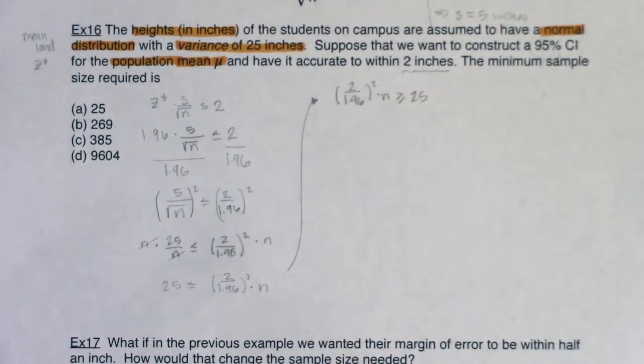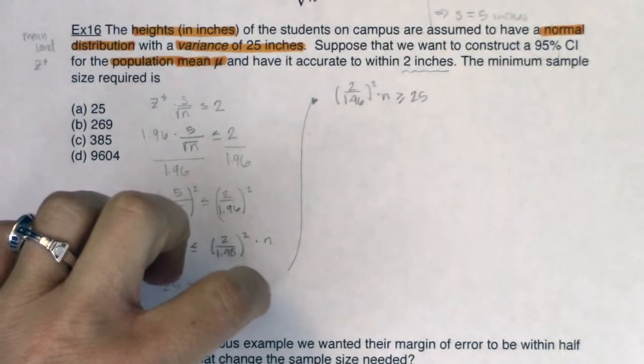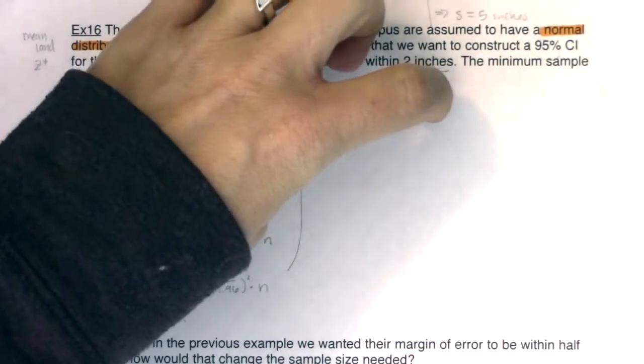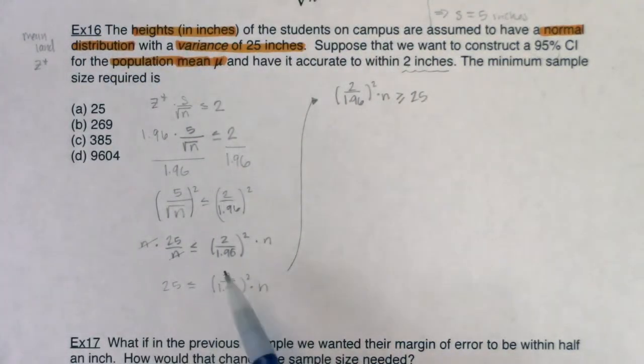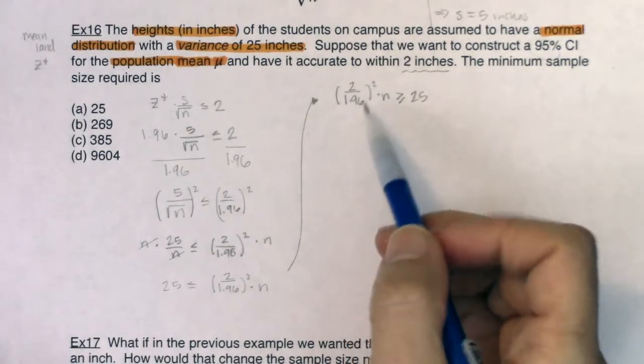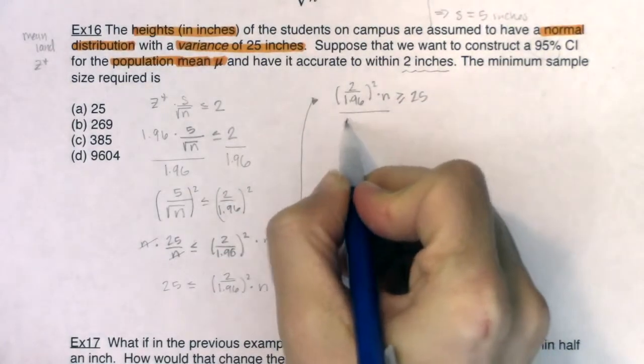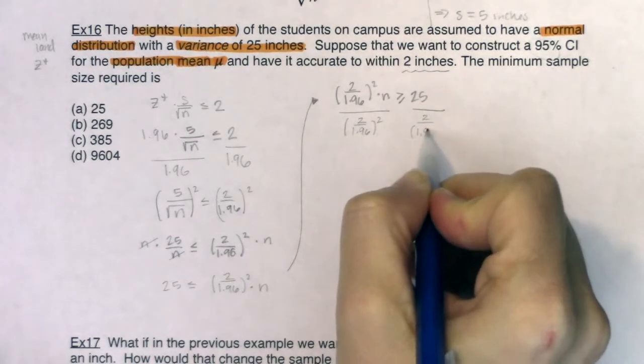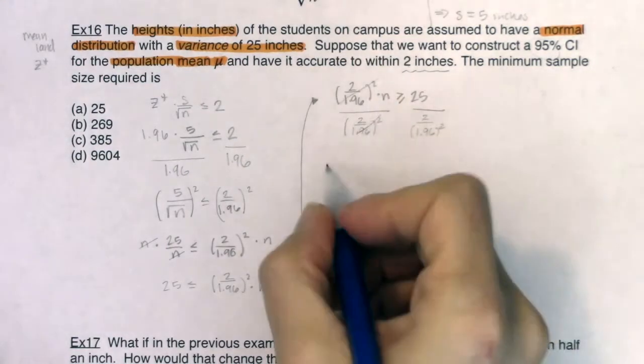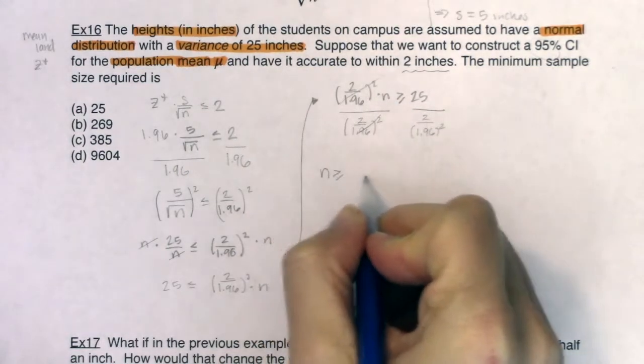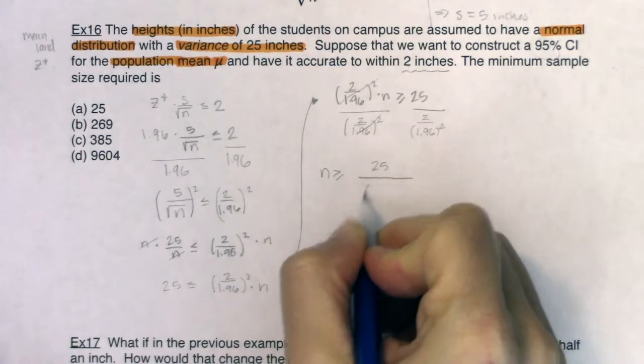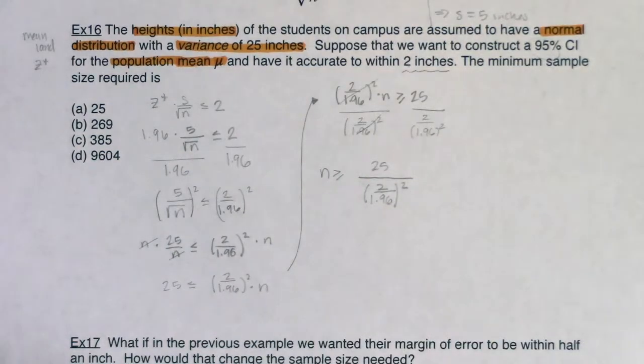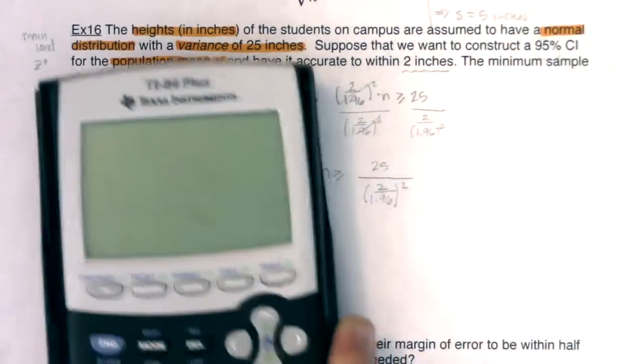So I will have 2 over 1.96 squared times n is greater than or equal to 25. So when you reverse the inequality, when you write this quantity that was on the right side, now you write it on the left side and you take the quantity that was on the left side, but write it on the right side, you've got to change the direction of the inequality. All right. So even though this looks weird, it's just a number. So I'm going to divide both sides by 2 over 1.96 squared. And then you can see I've solved for n. So n has to be greater than or equal to whatever this number is.